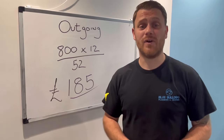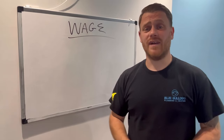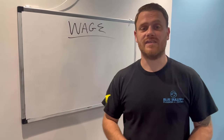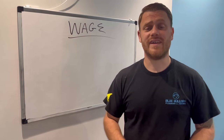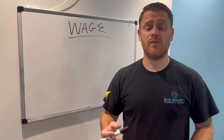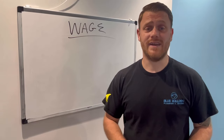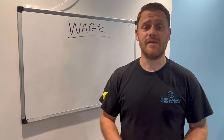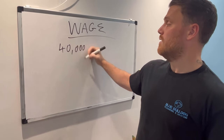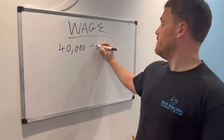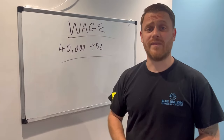Now we know it costs our business £185 per week to run. Let's look at paying ourselves a wage. When deciding how much to pay yourself, take the industry standard — for a gas engineer that's £35,000 to £40,000 per year. For this example we'll go to the top end: £40,000 a year. A lot of people divide £40,000 by 52 and think that's their weekly wage — but not quite.